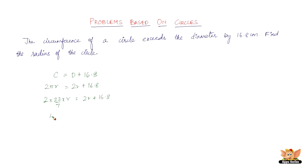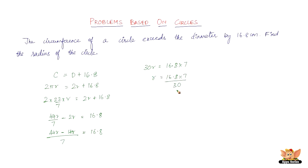Taking LCM as 7: 44r minus 14r over 7 equals 16.8, so 30r over 7 equals 16.8. Therefore r equals 16.8 times 7 divided by 30, which gives the radius as 3.92 centimeters.